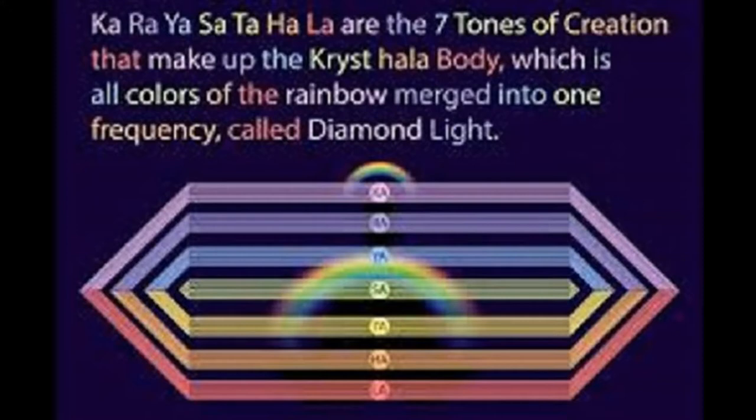Kathara, or crystal, comes from the seven first audible sound tones: Ka, Ra, Ya, Sa, Ta, Ha, and La, or A, B, C, D, E, F, and G.